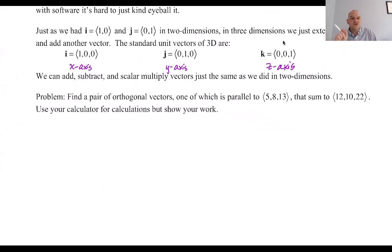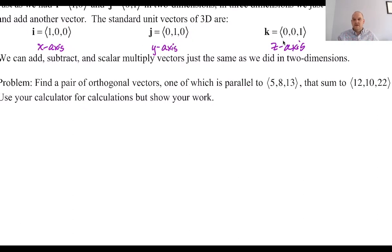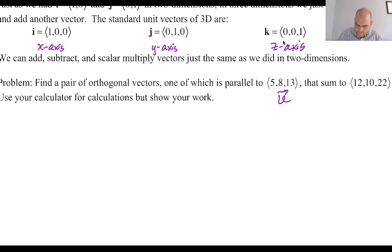You can add, subtract, scalar multiply, and use the dot product with vectors. There is no such thing as dividing vectors. This problem is a flashback: find a pair of orthogonal vectors, one of which is parallel to U = (5, 8, 13), and they sum up to V = (12, 10, 22).